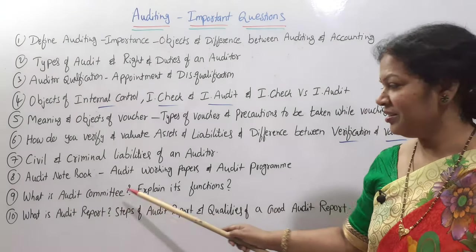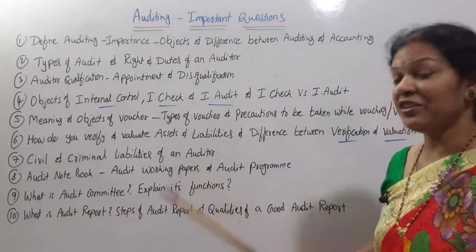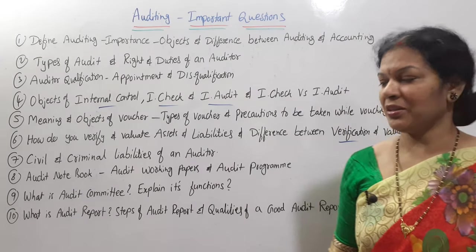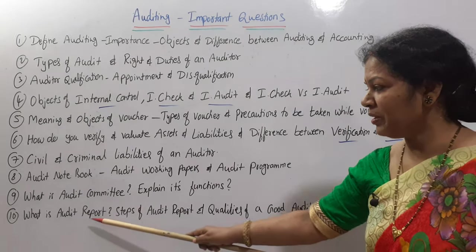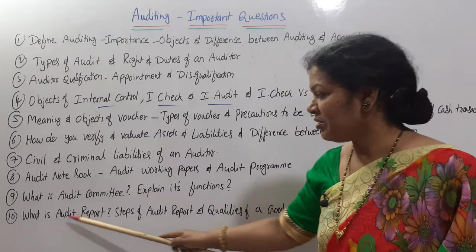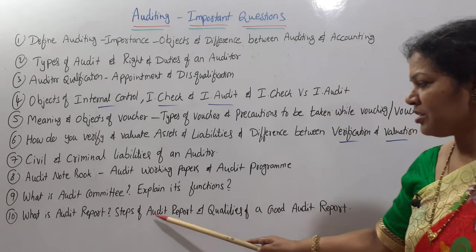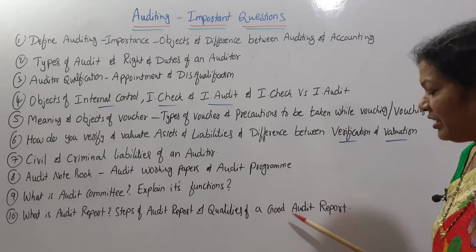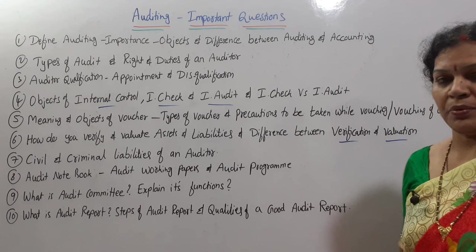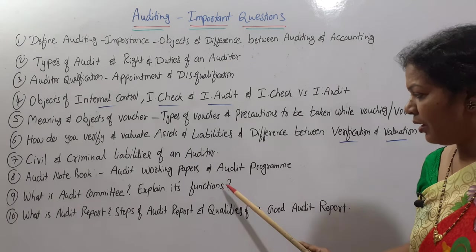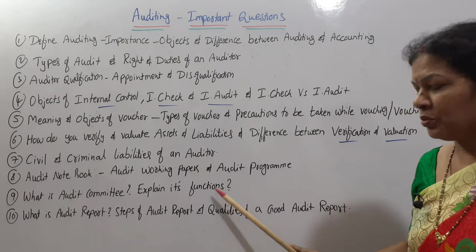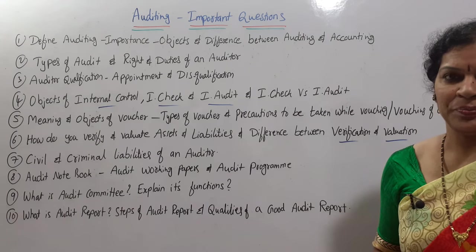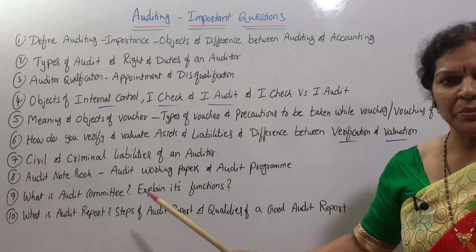Ninth question: what is an audit committee — explain its functions. This is from the fifth chapter. Tenth question, also from the fifth chapter: what is an audit report, steps of audit report, and qualities of a good audit report. Out of these two, at least one question is definitely expected, sometimes both.